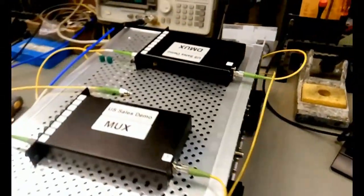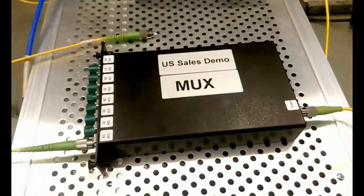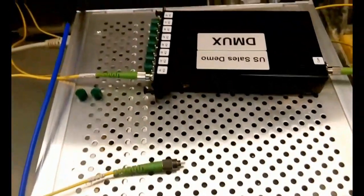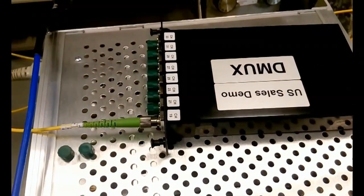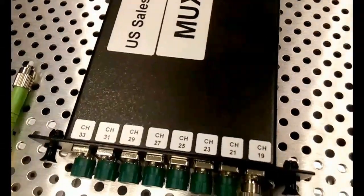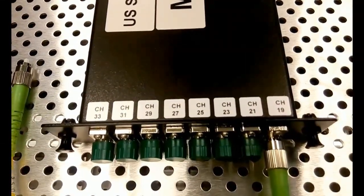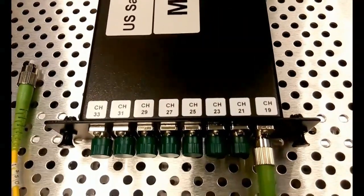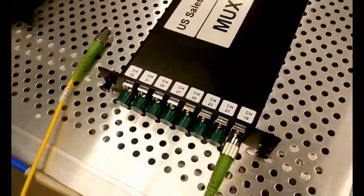The DWDM MUX and DMUX combine all the signals over one fiber for bi-directional use. They also come in a 1U housing or the smaller form factor LGX housing which we are using here. This 8 channel DWDM is marked 19 to 33 but is also available in all DWDM channels.